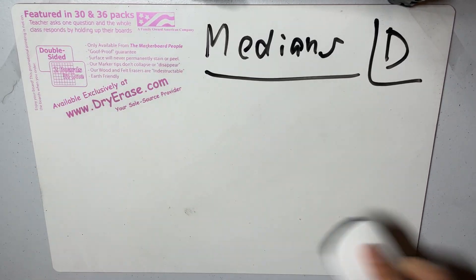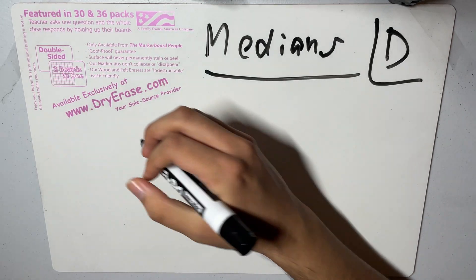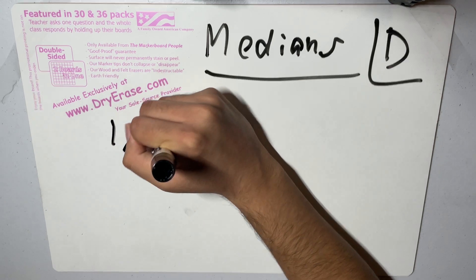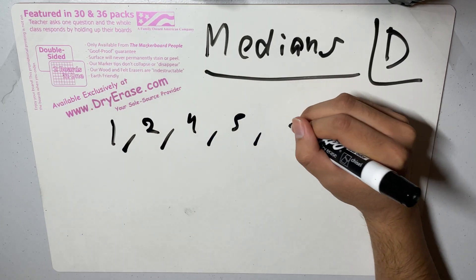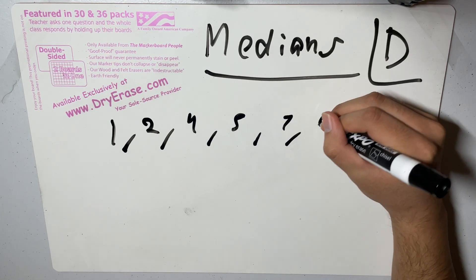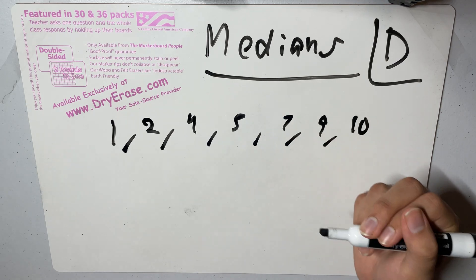From there, what you want to think about is, let's say you already have a bunch of elements in the array A. These elements, let's say they're like 1, 2, 4, 5, 7, 9, 10. Obviously the median of this array is 5.